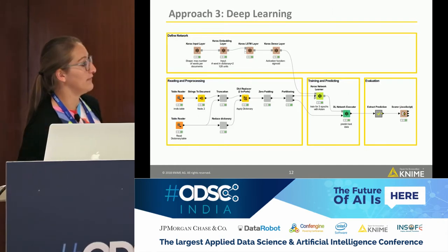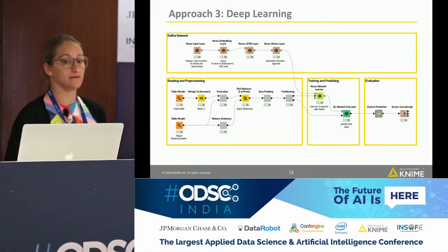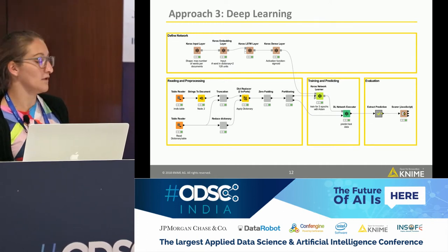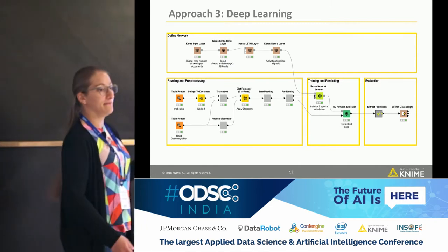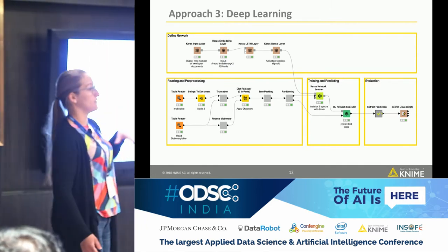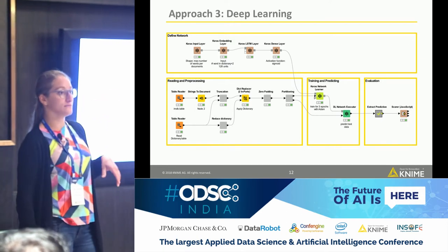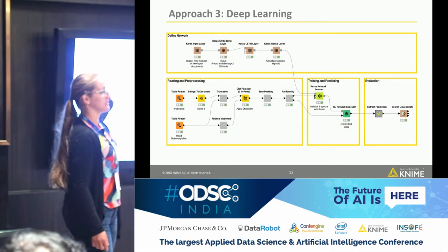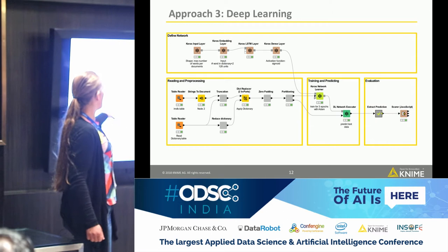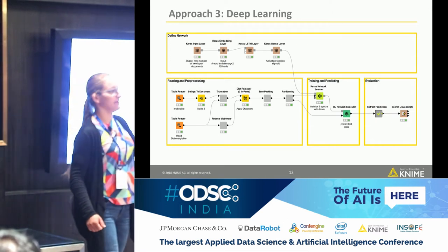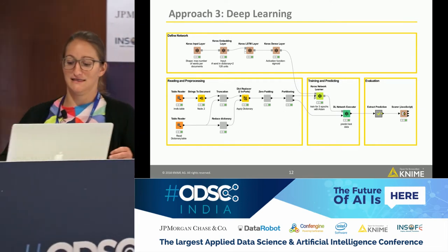Here we see a workflow using the Keras integration inside KNIME to build and train a network. We can define our network structure in KNIME without writing Keras code — we have different layer nodes for the different layer types, and you can just plug them together to define your network structure. The pre-processing like embedding and zero-padding happens here, and then the model is trained.